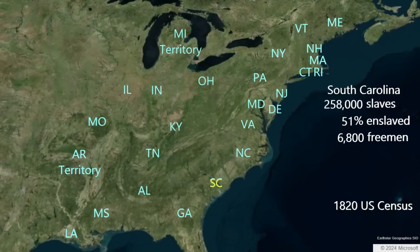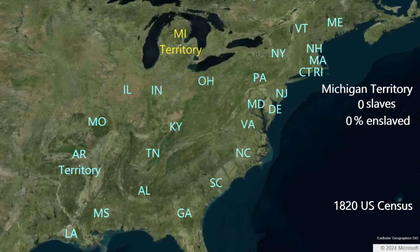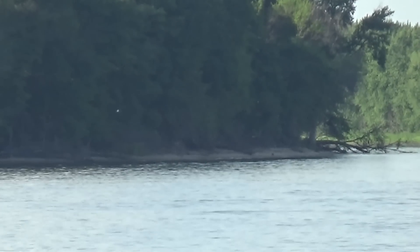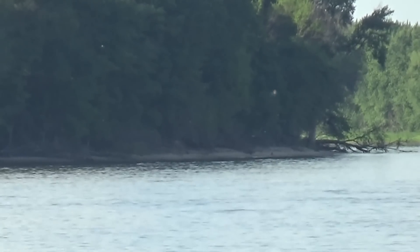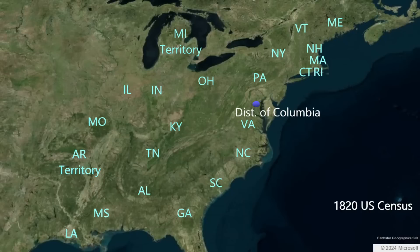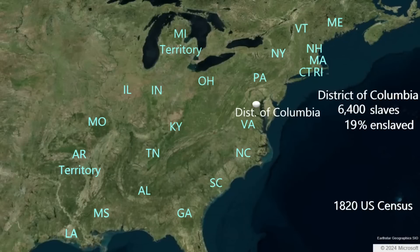Turning to the territories: the territory of Michigan tabulated zero slaves in 1820, with 174 free African Americans. The Missouri Territory, now slated to become the state of Missouri and the cause of the congressional struggle between slave and free states, recorded 10,200 slaves — about 15% of the population — and 347 free African Americans. The Arkansas Territory had 1,600 slaves, about 11% of the population, and 59 free African Americans. The District of Columbia had 6,400 slaves, about 19% of the district's population, and about 4,000 free African Americans — two-thirds the number of slaves.